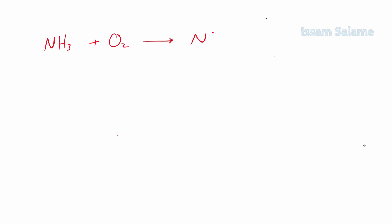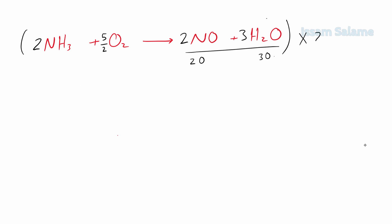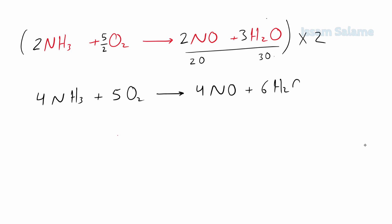Let's balance the reaction of ammonia with oxygen to produce nitrogen oxide and water. We have 3 hydrogen atoms on the left and 2 on the right, so multiply the left side by 2 and the right side by 3, giving 6 on both sides. We then balance the nitrogen atoms by multiplying by 2. On the right side we have 2 oxygen atoms in the first compound and 3 in the second, totaling 5, while on the left we have 2. We multiply the oxygen molecules by 5/2, then multiply the whole equation by 2 to eliminate the fraction. The final balanced equation is: 4 NH₃ + 5 O₂ → 4 NO + 6 H₂O.